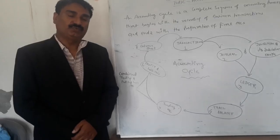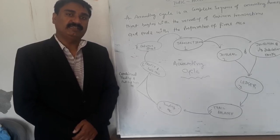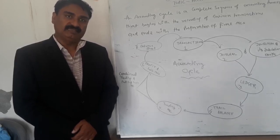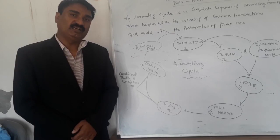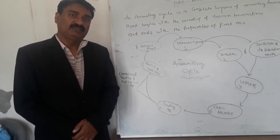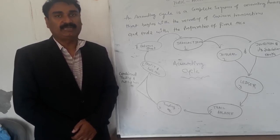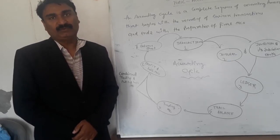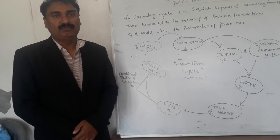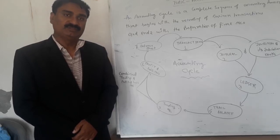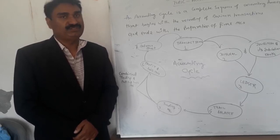In the end, in short, we can say that accounting cycle is a continuous process. It begins with the recording of the transaction into journal, then moves these transactions to the ledger, and then further moves to the trial balance to check the accuracy of accounts, and then moves to the trading profit and loss accounts and ends with the balance sheet.